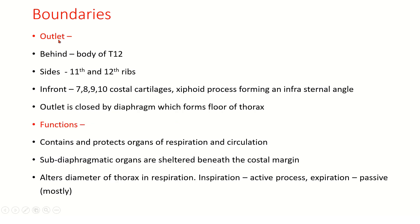The outlet is wider than the inlet. It is bounded behind by the body of T12, on the sides by the 11th and 12th ribs, and in front by the 7th, 8th, 9th, and 10th costal cartilages and the xiphoid process forming the infrasternal angle. The outlet is closed by the diaphragm, which forms the floor of the thorax.